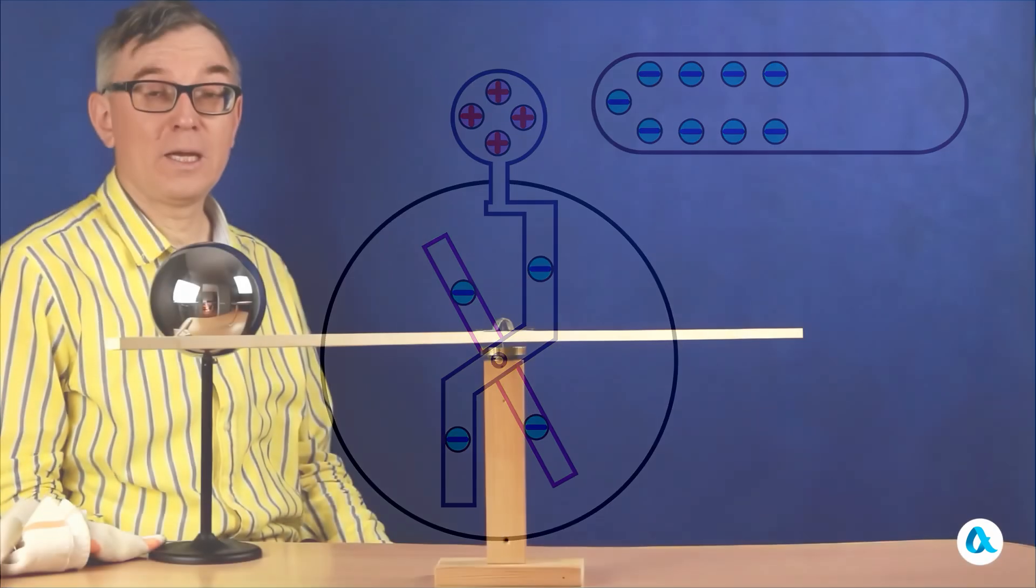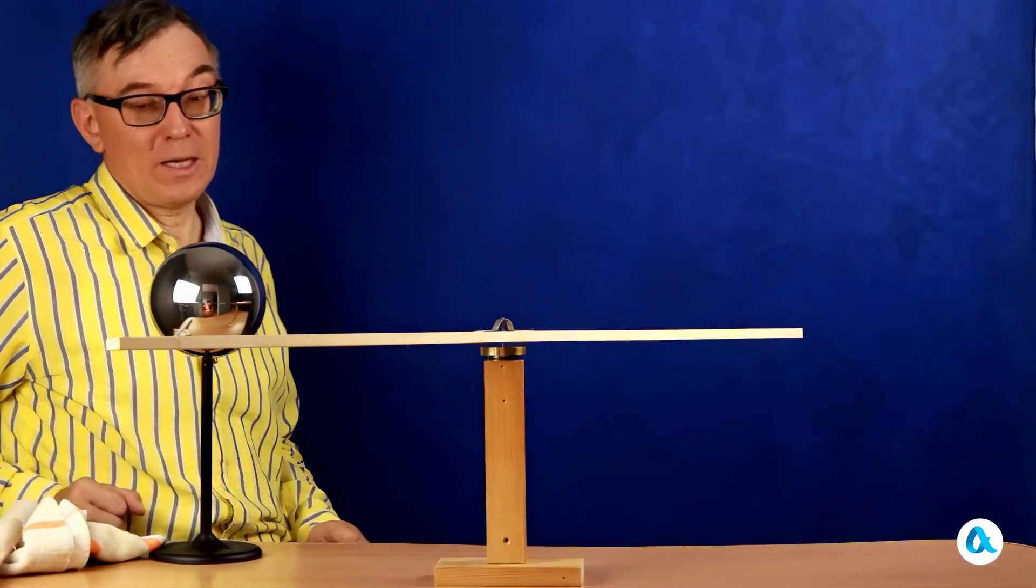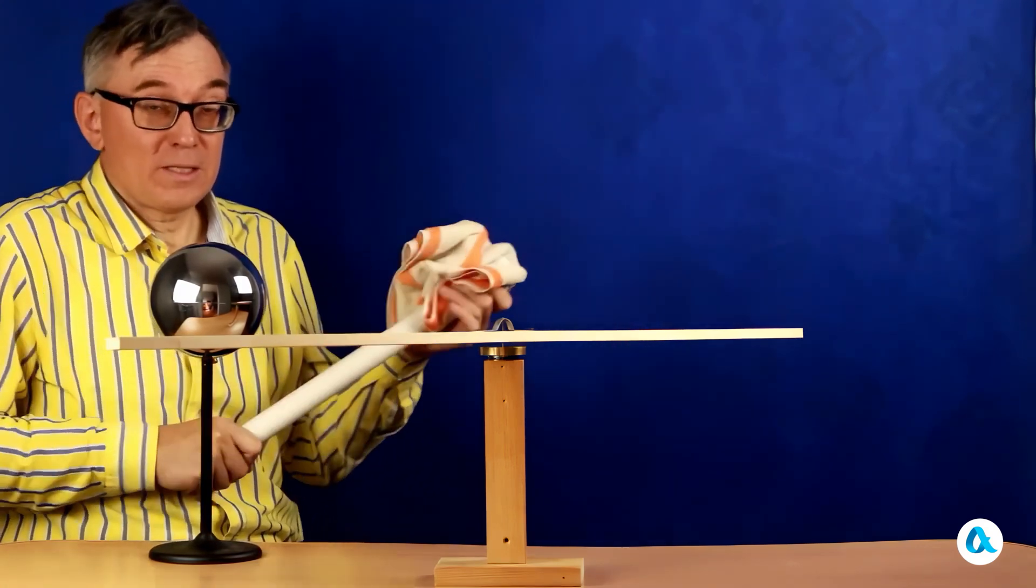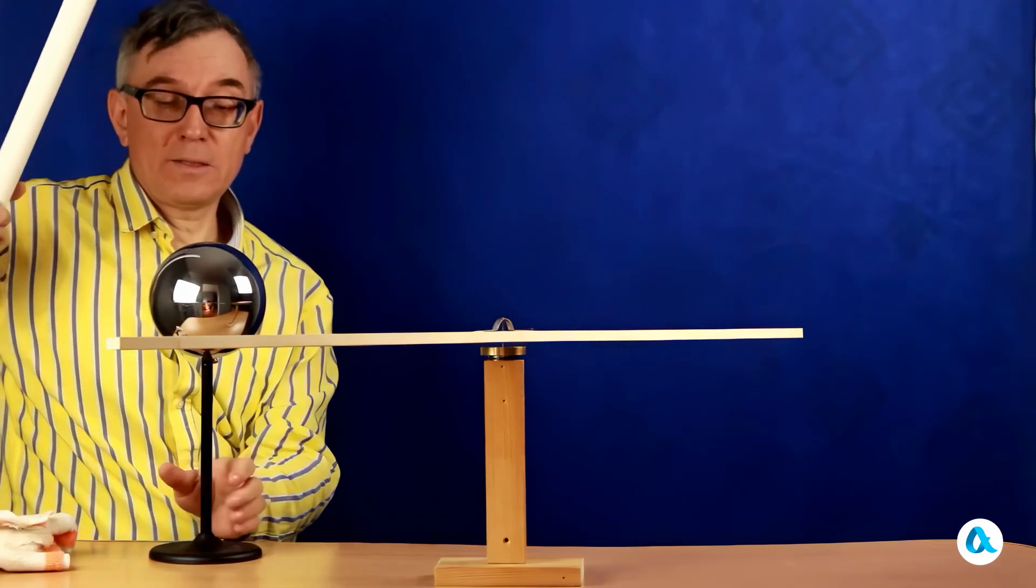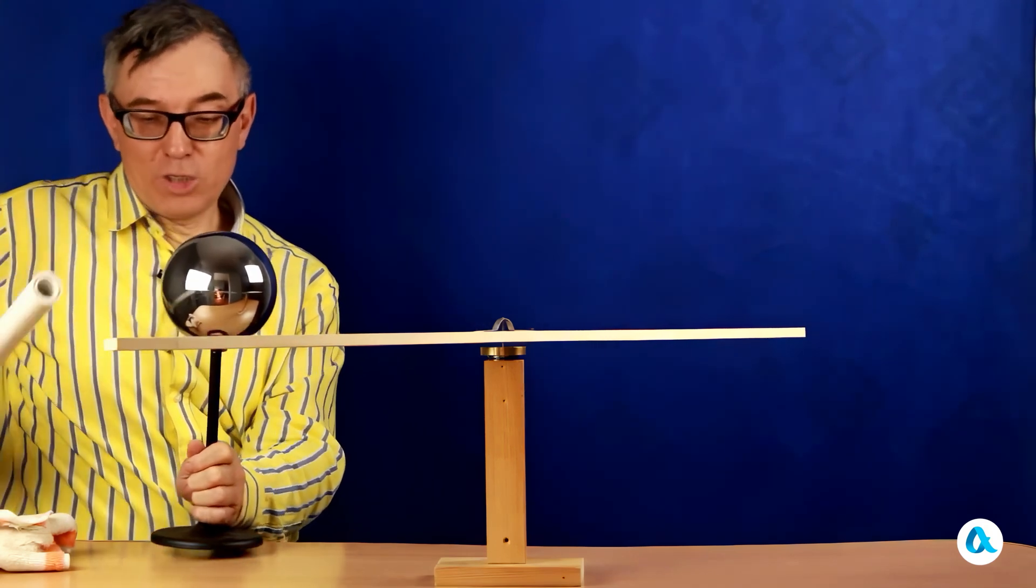And now let's conduct another experiment. Here, a wooden rod is mounted on a vertical axis. Now I rub again the plastic tube, our source of negative electricity, and transfer the charge to this metallized ball.